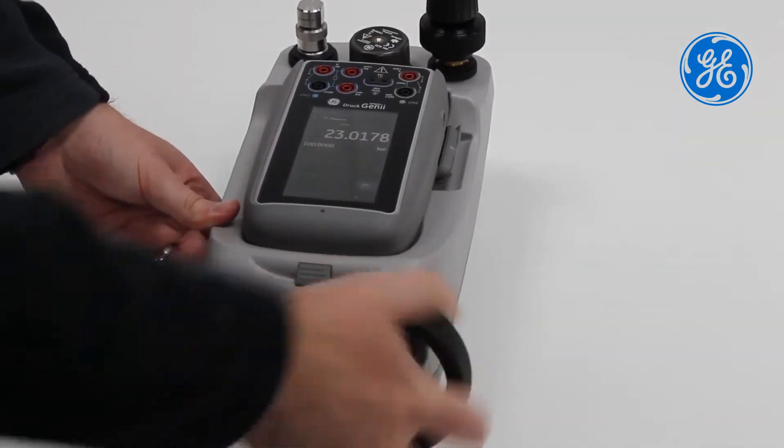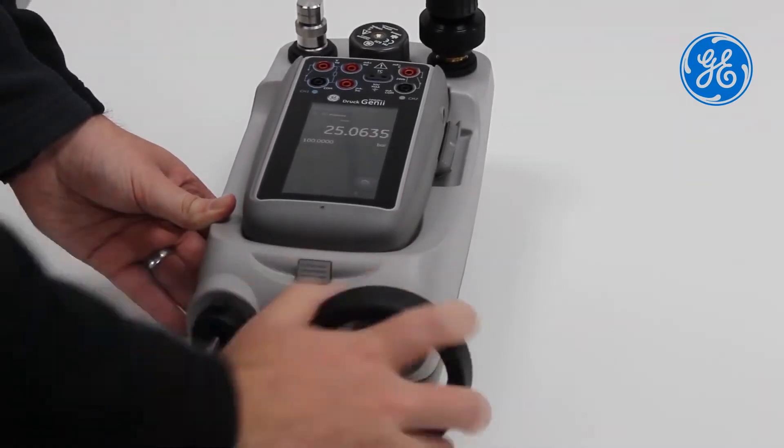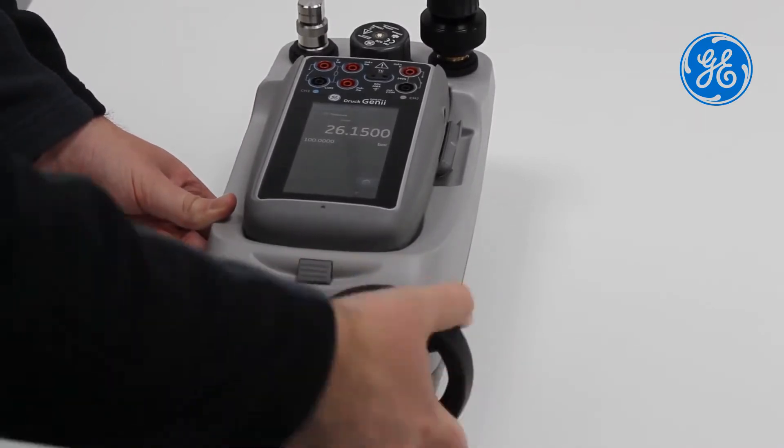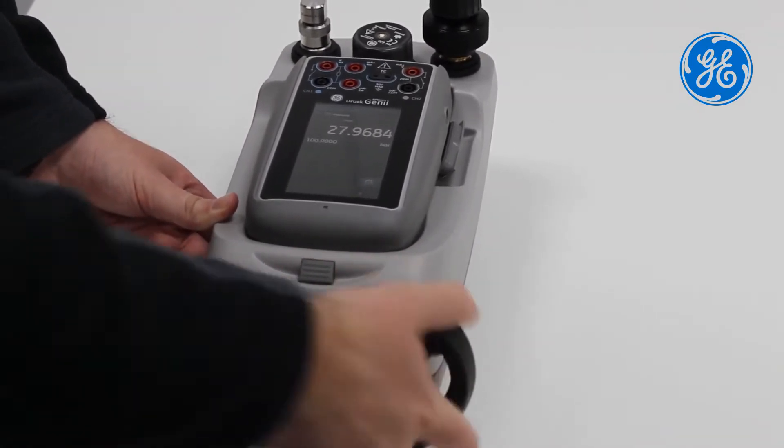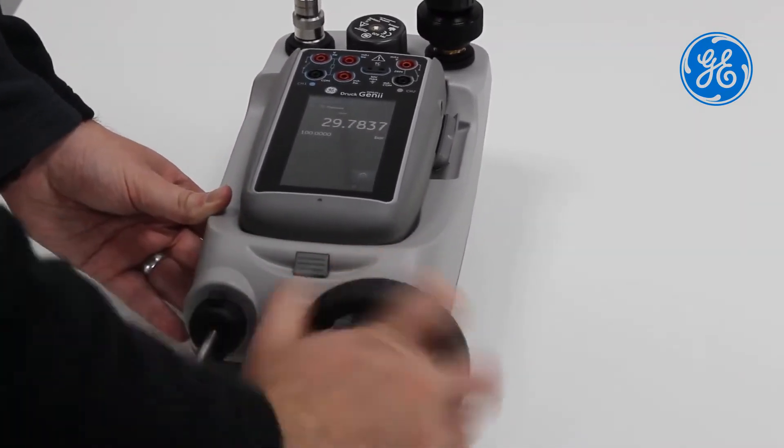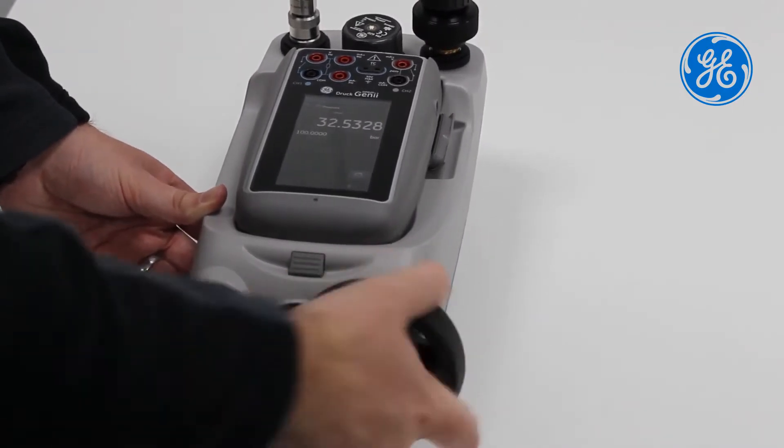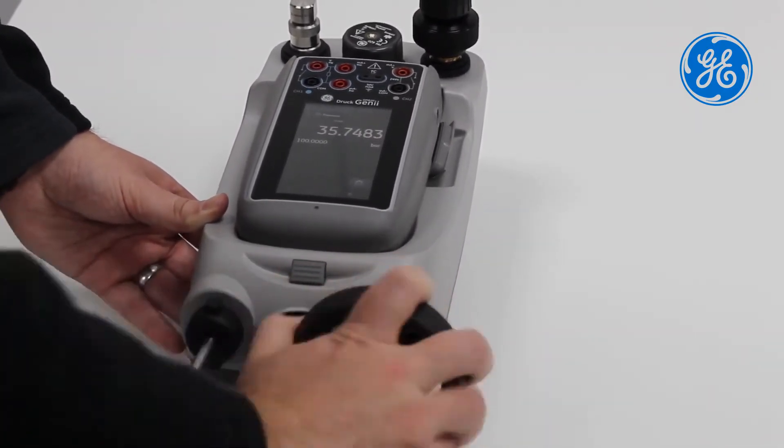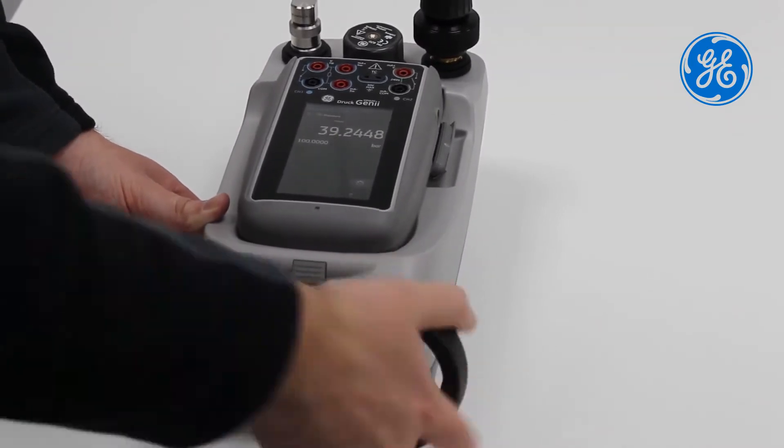There are three pressure generation stations. The PV621, a pneumatic pressure generator for pressures 95% vacuum to 20 bar. The PV622, a pneumatic pressure generator for pressures 95% vacuum to 100 bar. And the PV623, a hydraulic pressure generator for pressures up to 1000 bar.